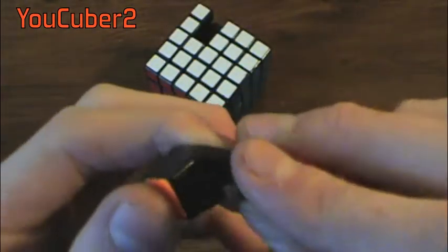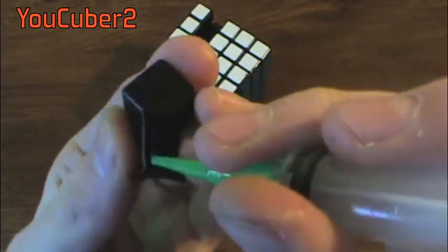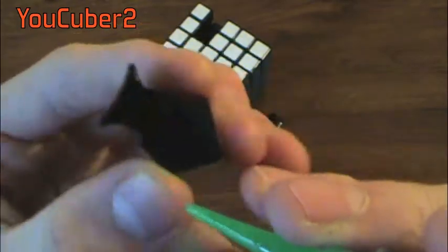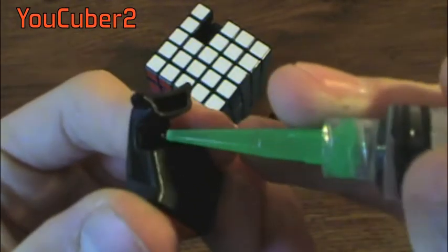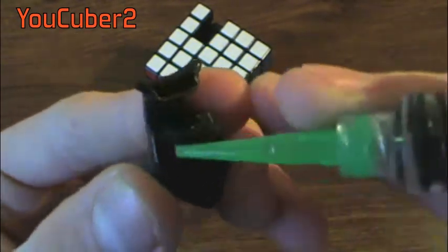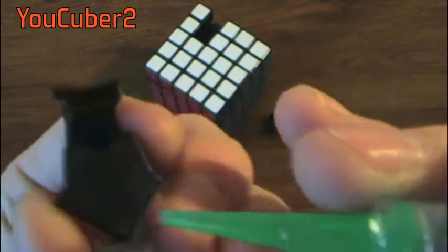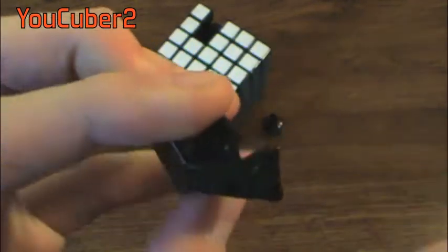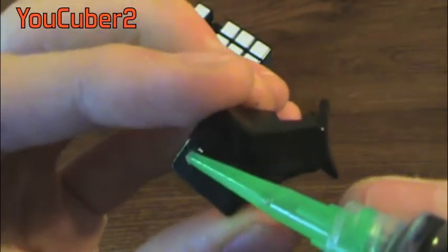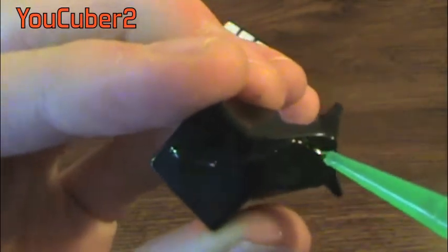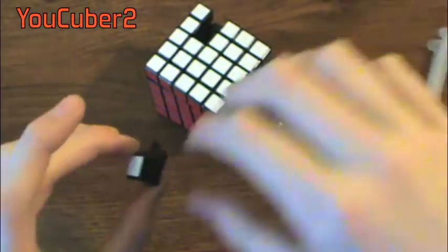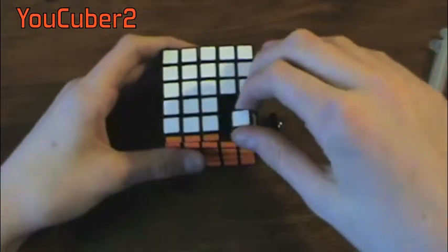So now we're going to lubricate this edge. As we've known before, there's contact points all the way down here with the corner and all the way down here with the middle edge. So what I'm going to do is I'm going to take some lube and put it in here. I'm just going to put a thin line down and a little bit here. And now we are going to put this back inside our cube.